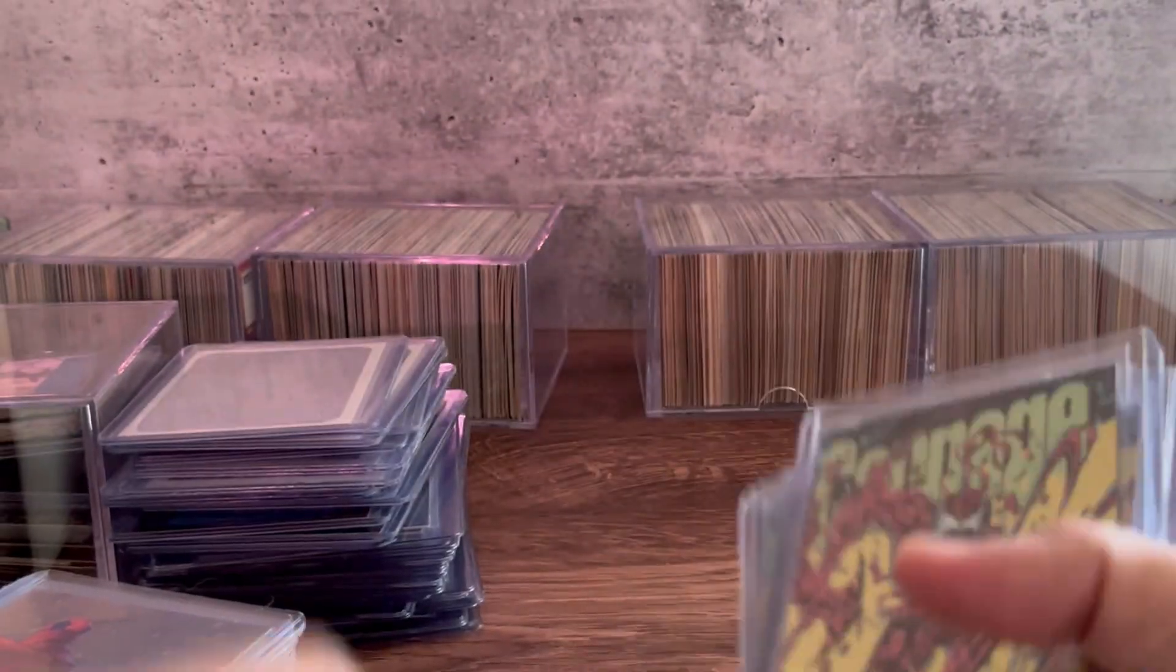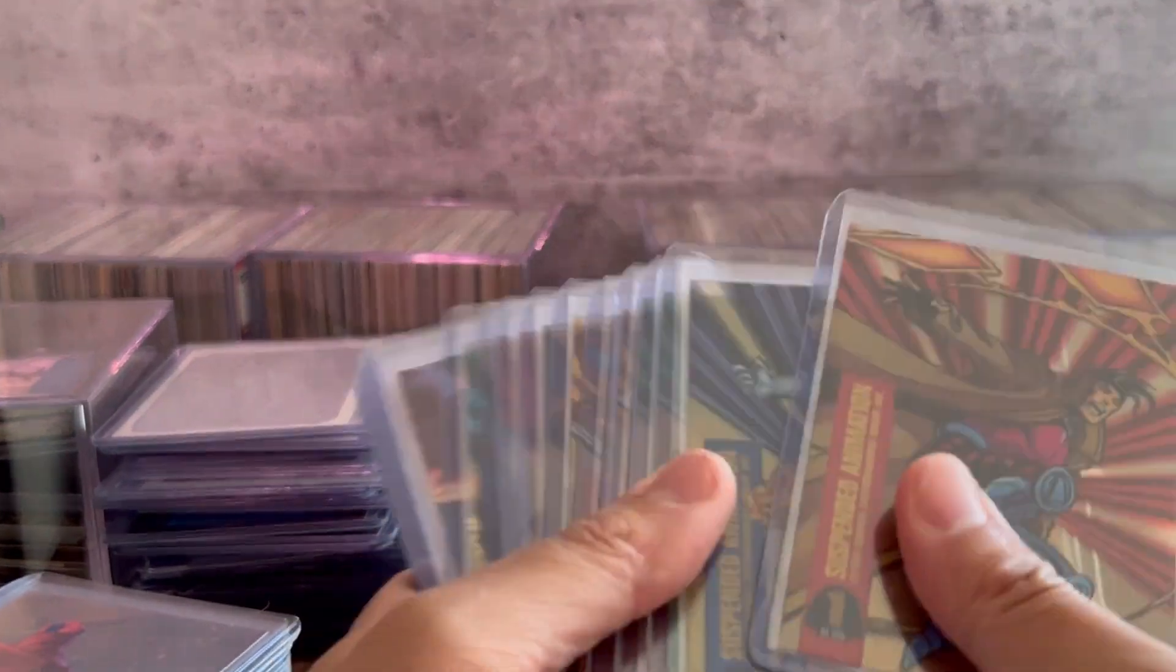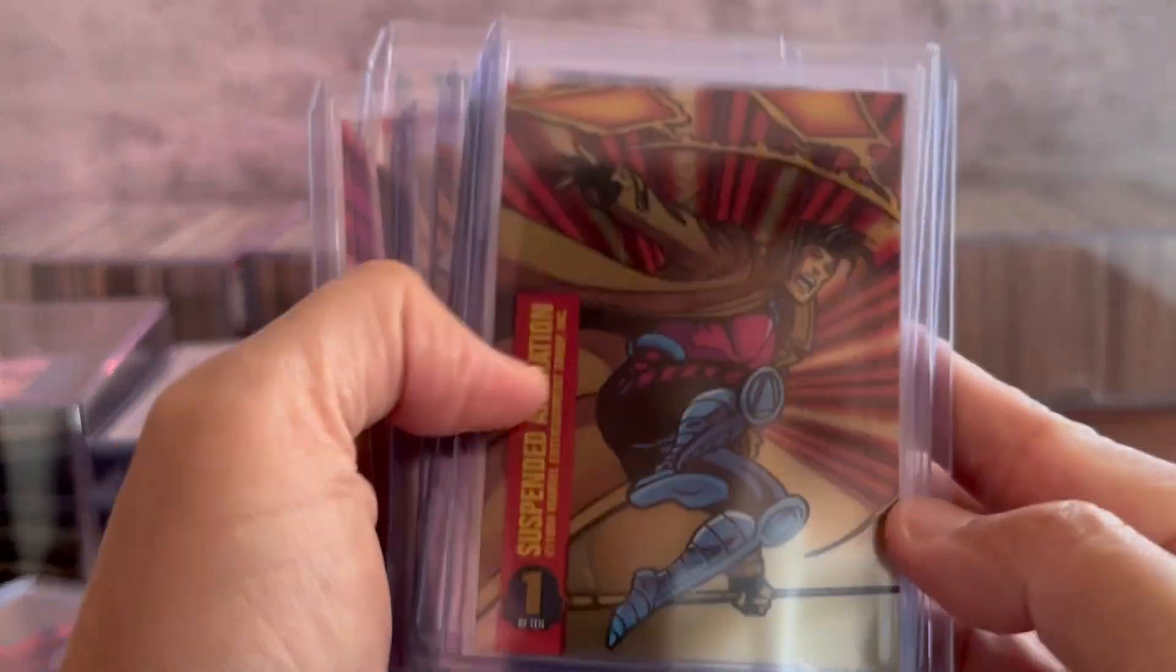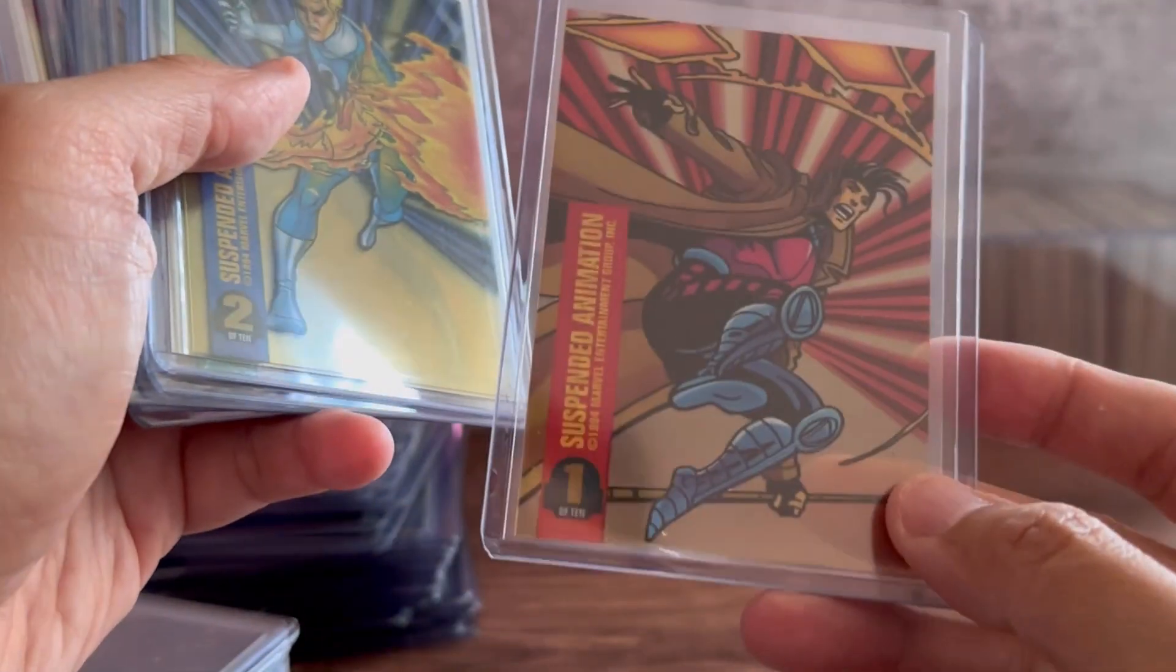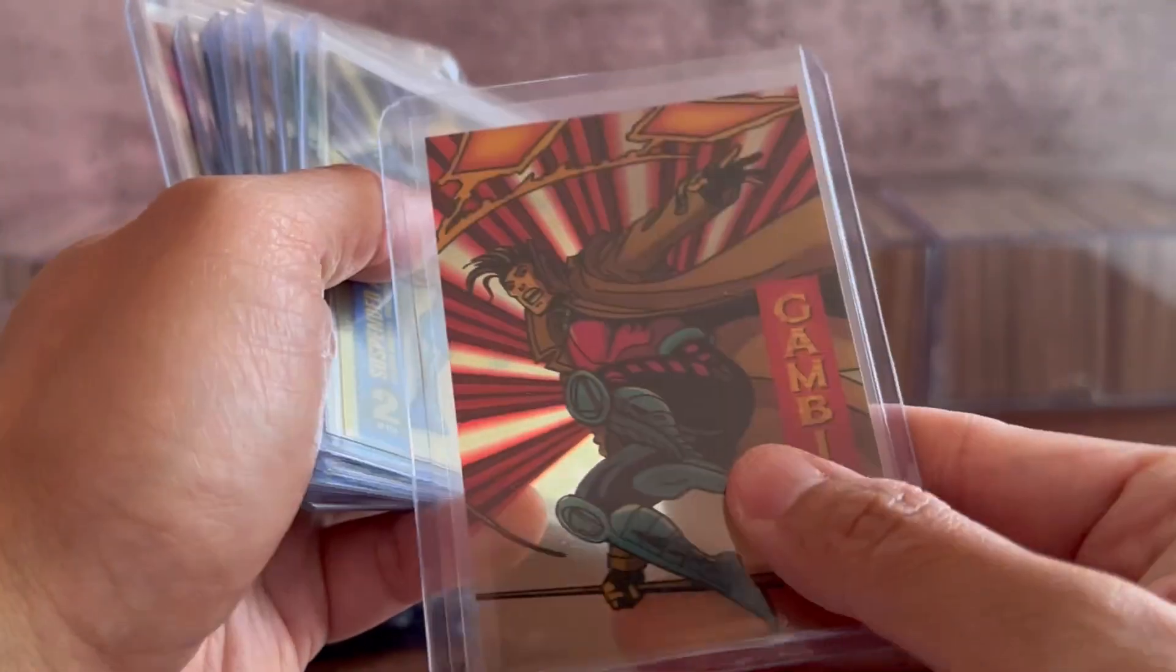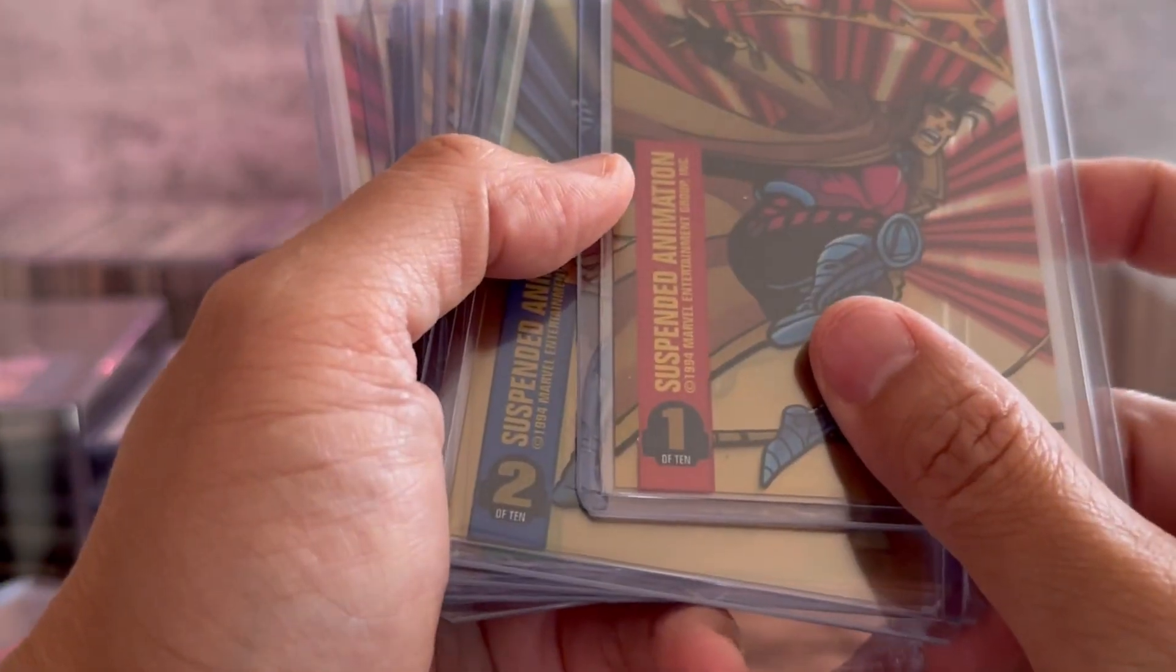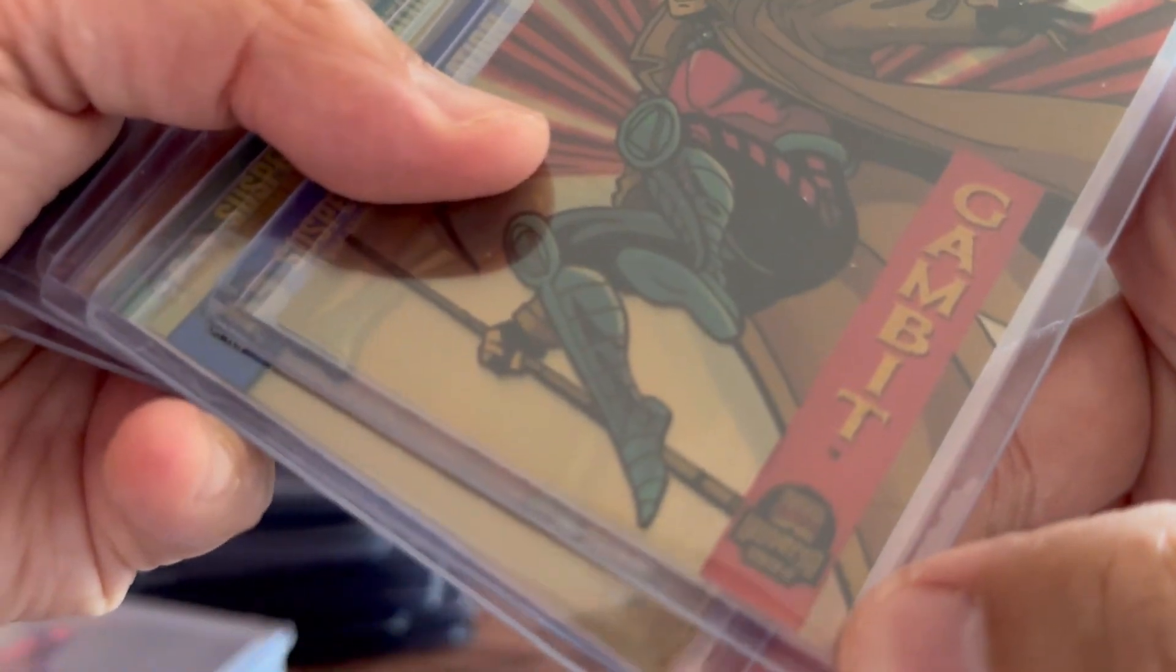Then we have another one here, this one is suspended animation. These are those acetate cards, clear acetates where you get to see it has that clear finish to them.